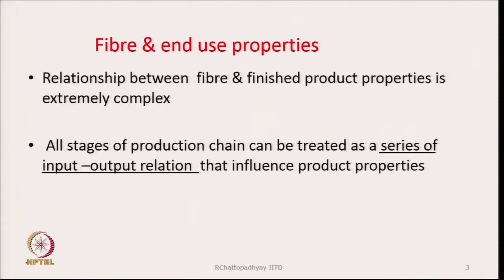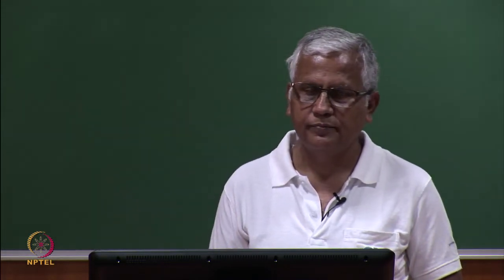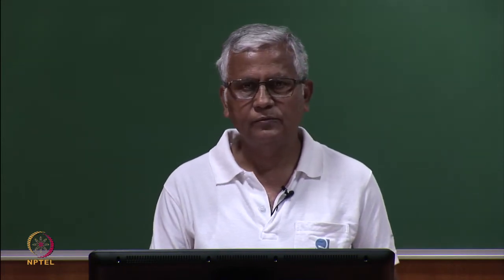All stages of production can be treated as a series of input-output relations that influence product properties. From raw material to the finished product there is an enormous number of processes. The fiber, which is the starting building block, passes through so many operations, and therefore there can be many changes in its own properties, and when assembled, the properties of the assembled product may also differ.